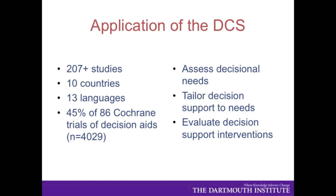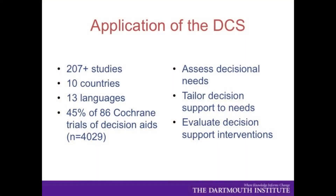Basically, I've assessed your decisional needs — what do you feel about this decision right now, where are you at? That reflects my nursing background; I do a lot of coaching in decision making and I want to know what you're feeling right now. The scale can also tailor decision support to needs. Values are huge. Information may help a little, but in the sense that you might not be clear about what matters most to you.